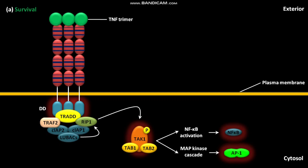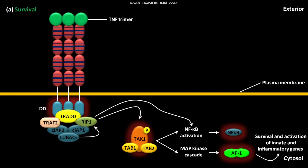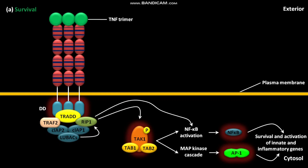RIP1 also causes proper NF-κB activation. The active AP1 leads to cell survival and activation of innate and inflammatory genes. Similarly, active NF-κB leads to cell survival and activation of innate and inflammatory genes. Active NF-κB also activates transcription of the C-FLIP protein, which remains in the cytosol.